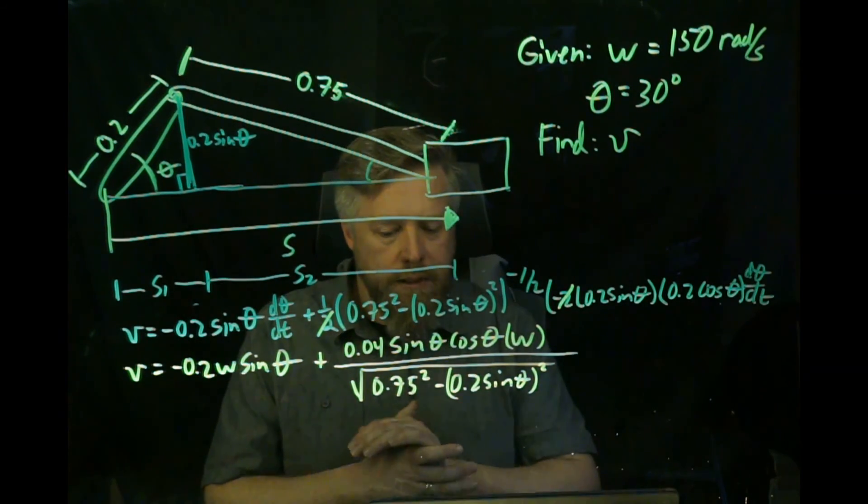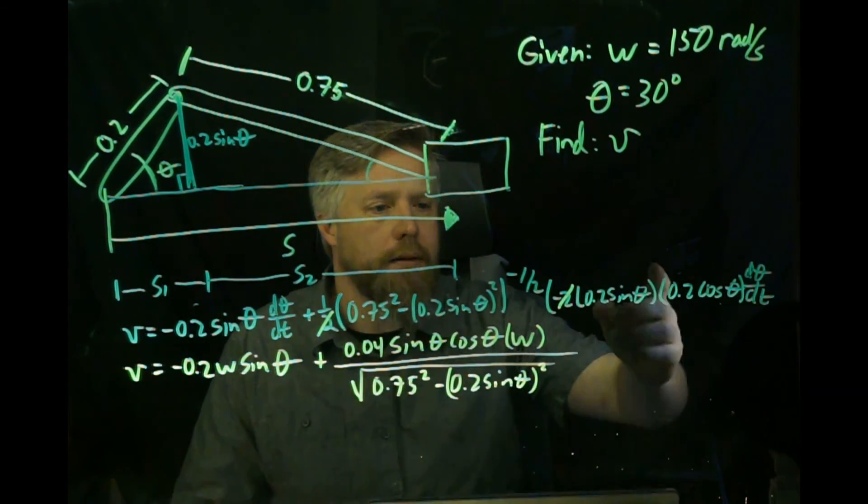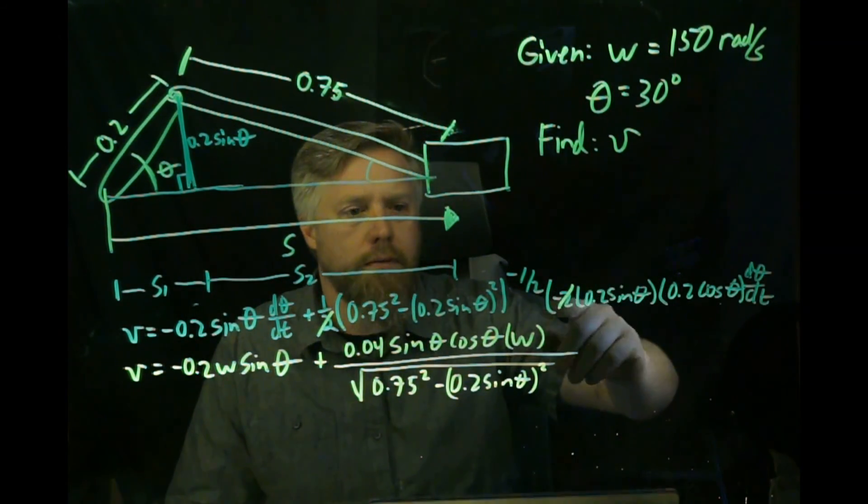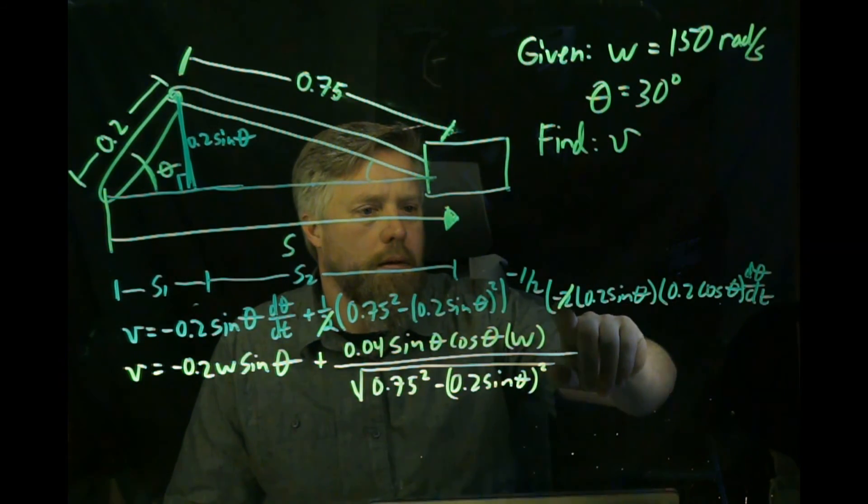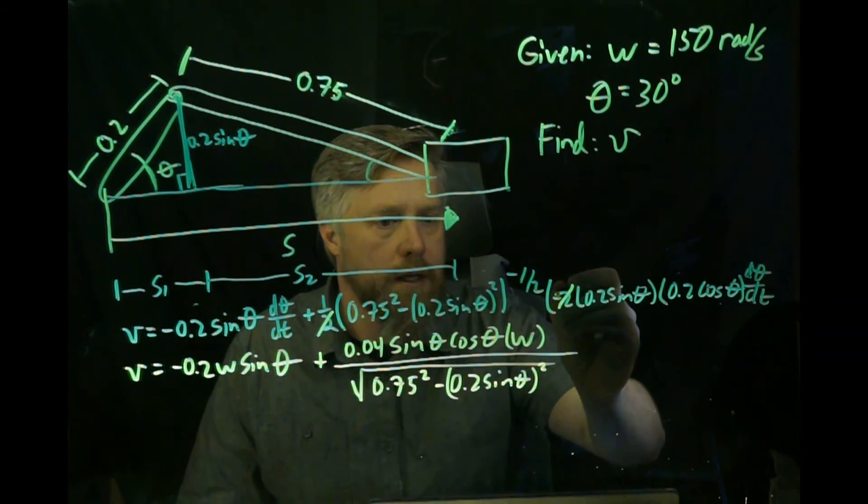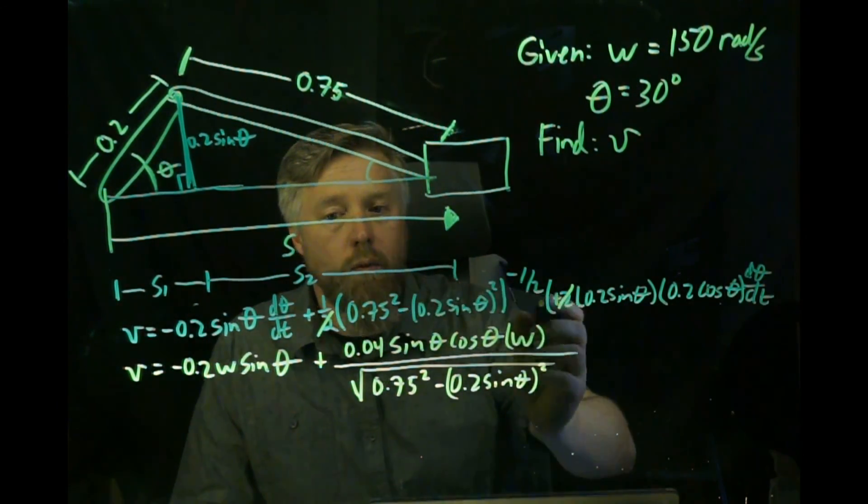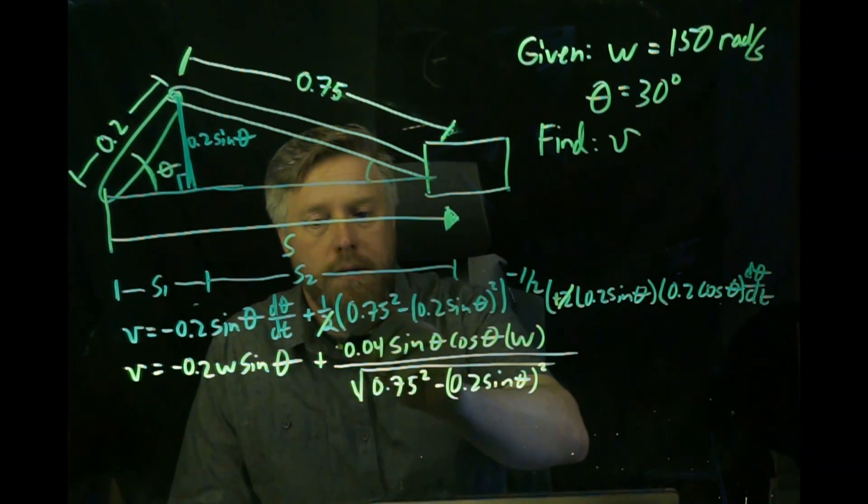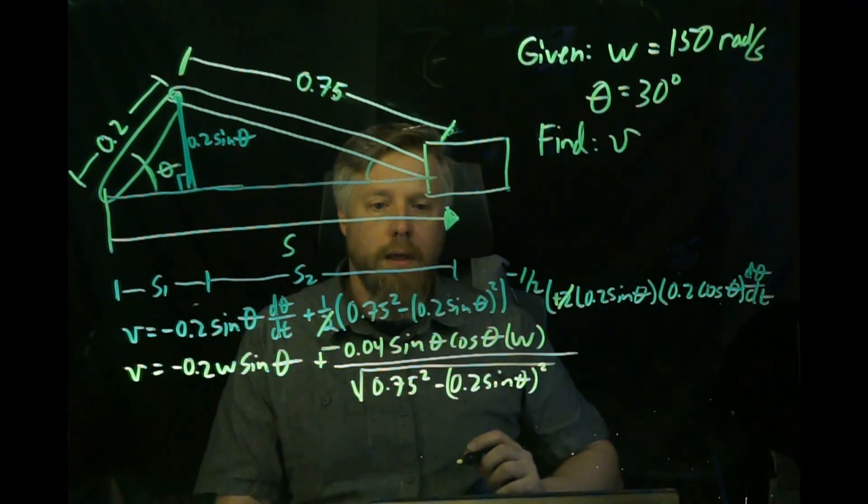I actually found a small mistake that I made when I brought down the power of 0.2 sine theta squared. For some reason I made it negative. That should have been positive. So this is actually positive here. Let's leave this with just one negative, so this whole top part is negative then. We all make mistakes.